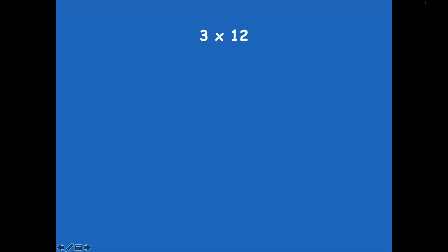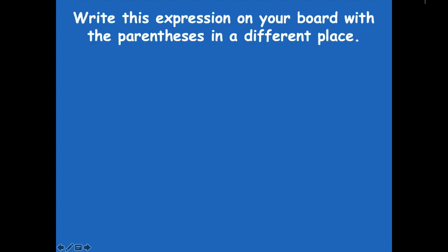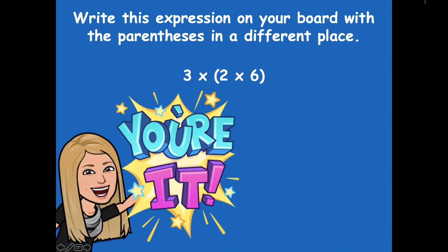So if I have three times 12, and then I write three times two times six — why are these expressions equal? Because 12 is just two times six. All we did was break down that 12 into a multiplication problem. Now write this expression on your board with the parentheses in a different place — that's the associative property. We're taking the parentheses around two times six and shifting them over to the other part of the problem. Rewrite with the same factors three times two times six but shift the parentheses, then click play when ready.